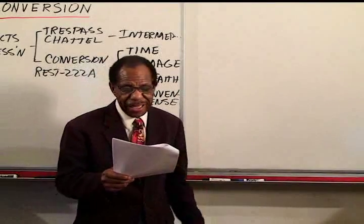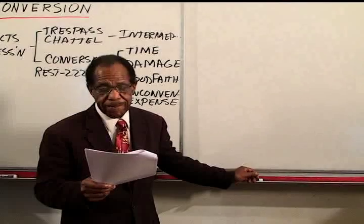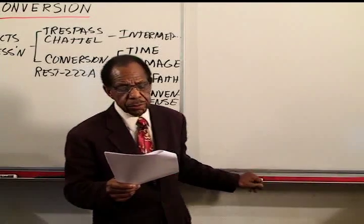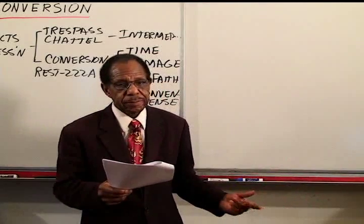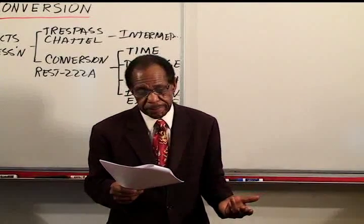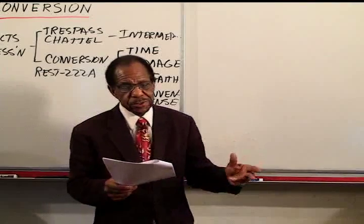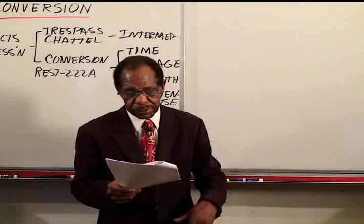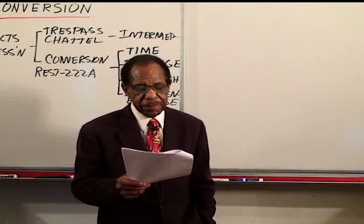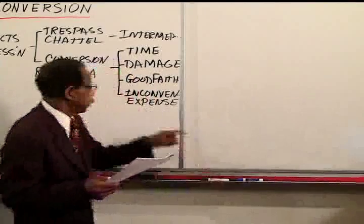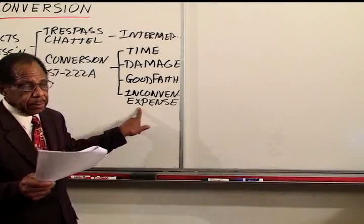Illustration 5: A takes possession of a house and finds B's furniture inside. A removes the furniture to a storage warehouse, stores it in B's name, and notifies B that he may come and get it. This is not a conversion. Illustration 6: Same facts about the furniture in the house, except that A removes it to a warehouse at such a distance that B is subject to great inconvenience and expense in recovering the furniture. This is a conversion.